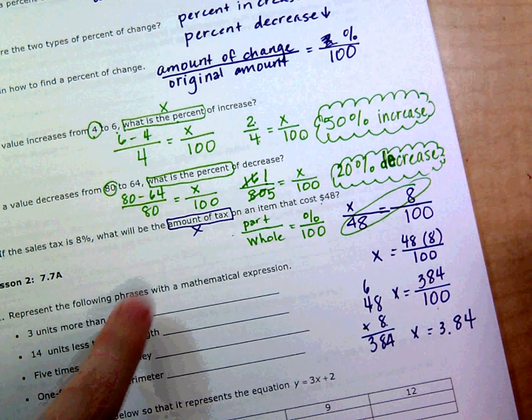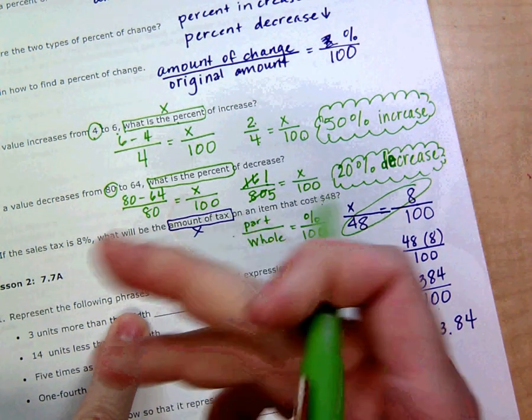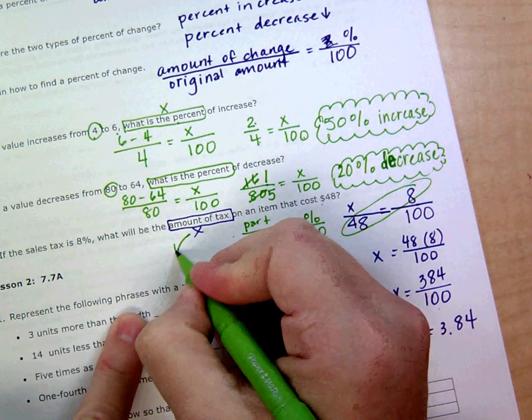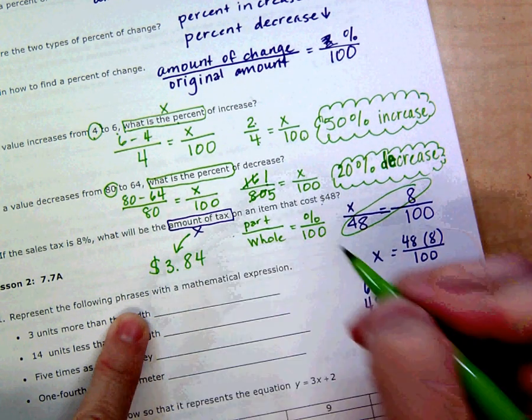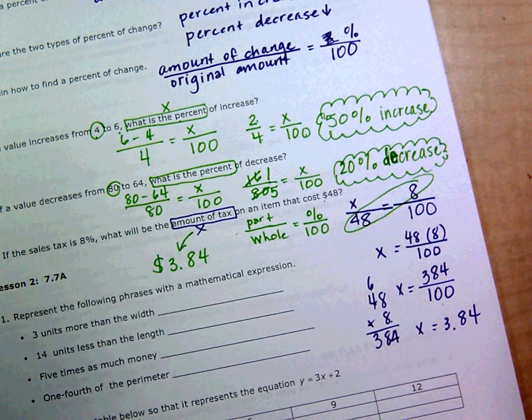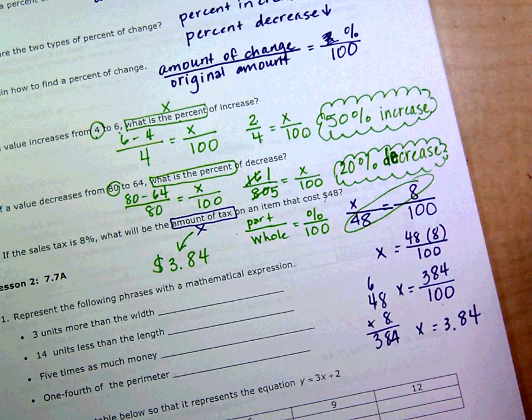So the amount of tax is $3.84. It's only asking us for the tax on the item, it's not asking us for the total cost, so we're just going to leave it there.